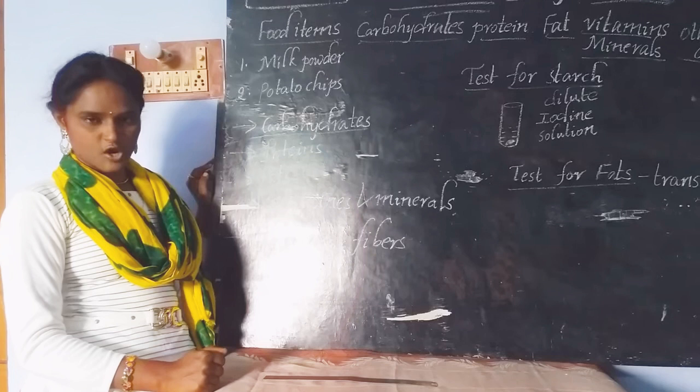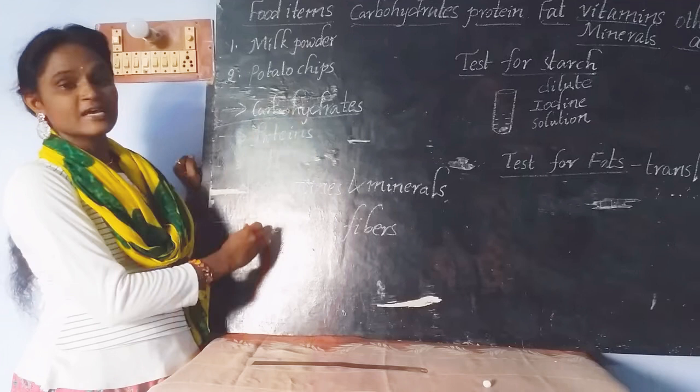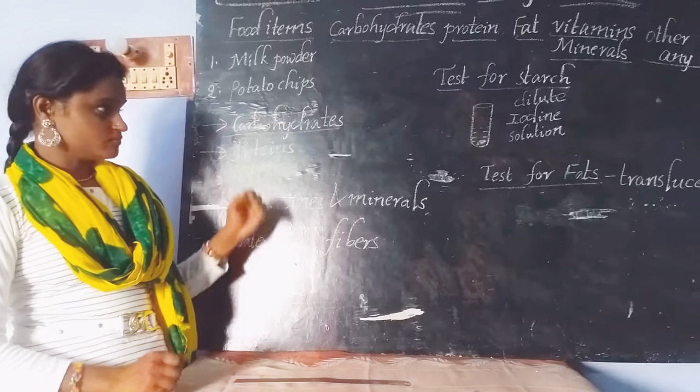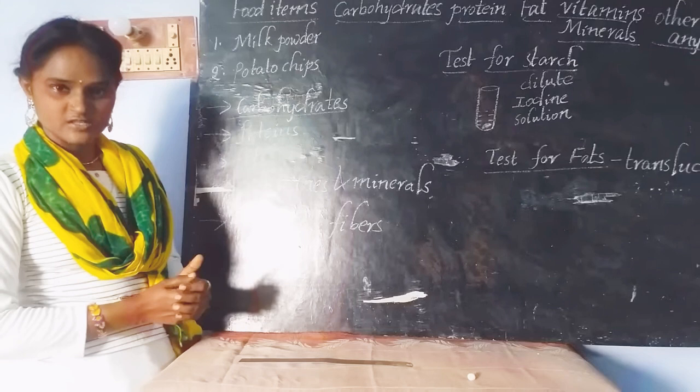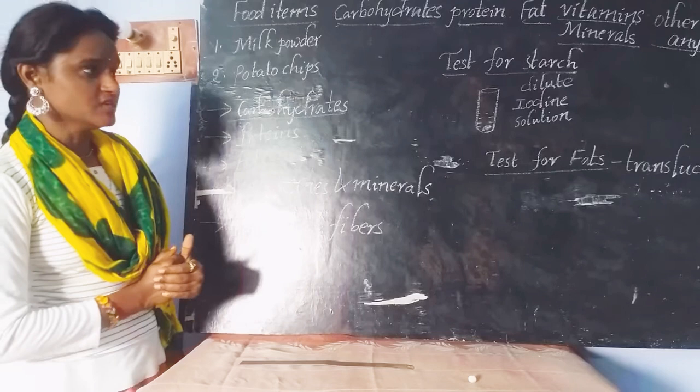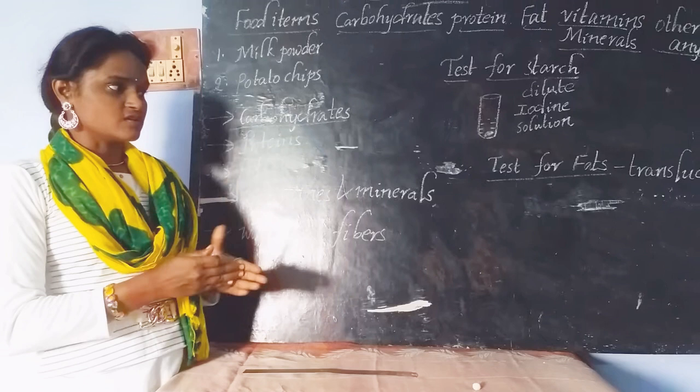These are the different varieties of components present in food. Now we have to know: does the food we are eating really contain all these components? How can we believe it? By testing, by experimenting. Now we are going to discuss about how to test for starch and how to test for the presence of fats in food.